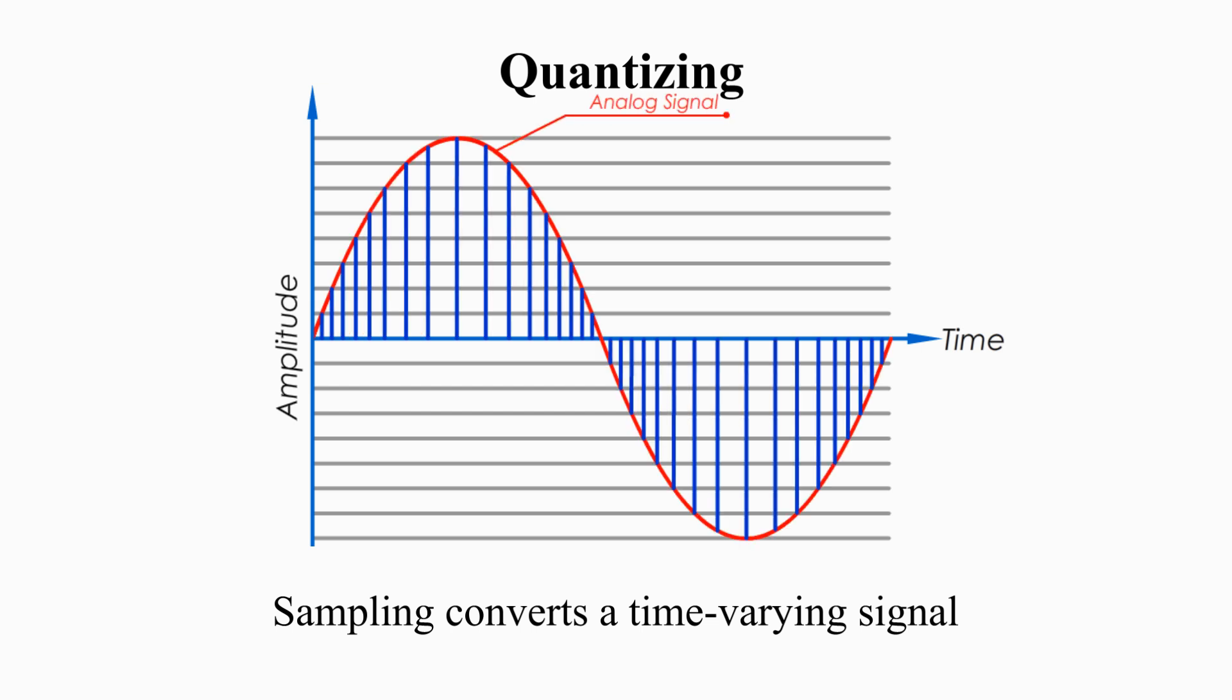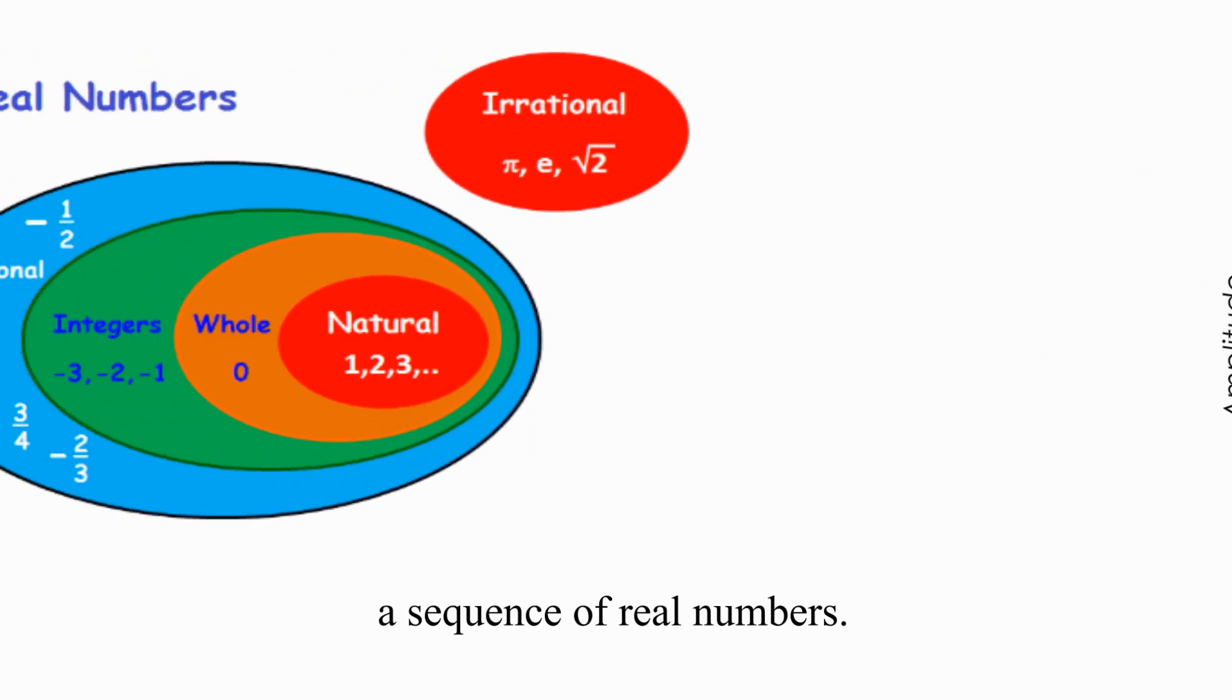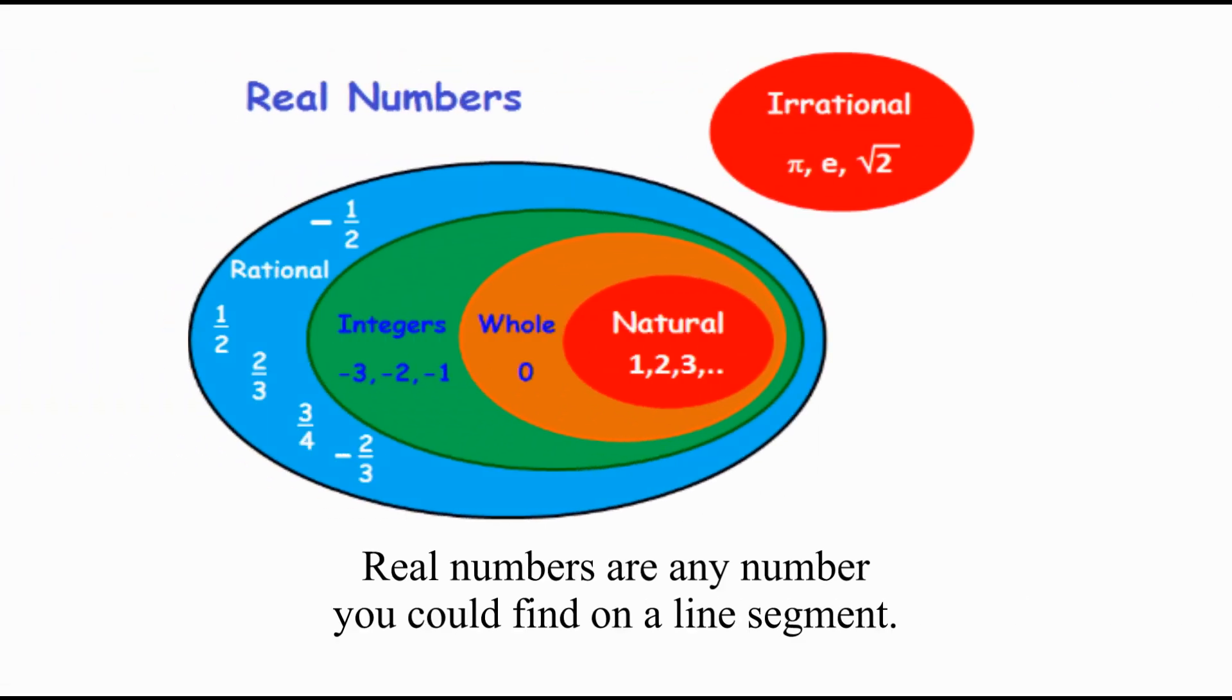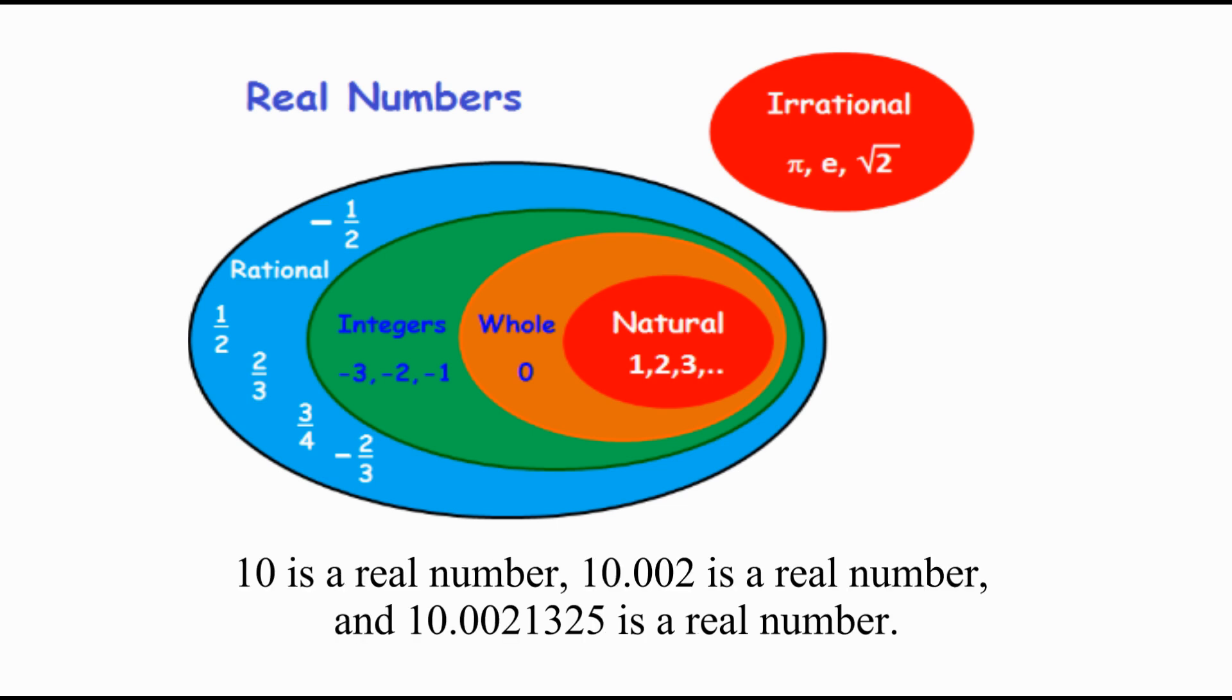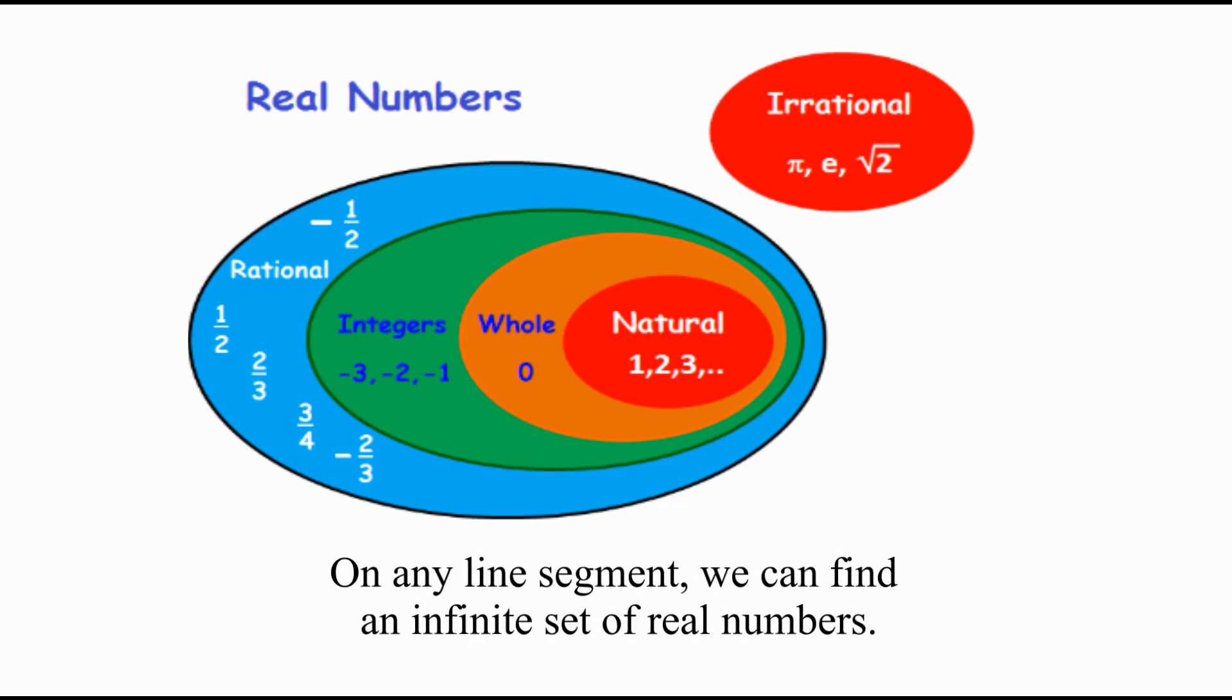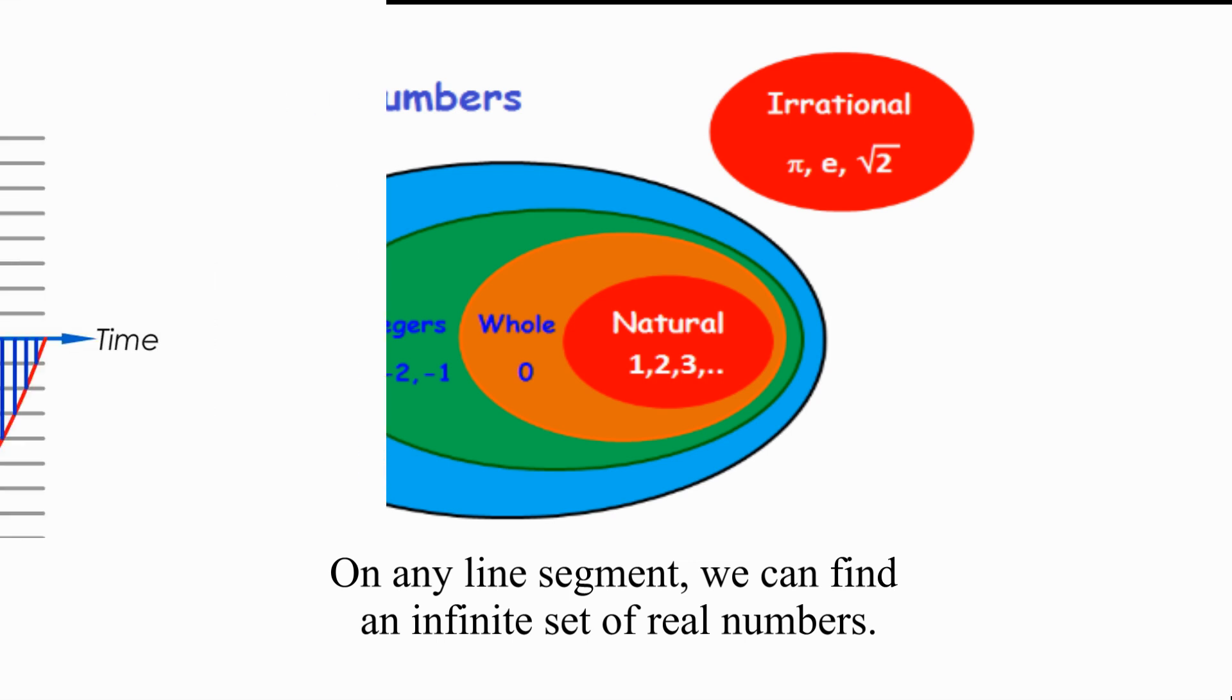Sampling converts a time-varying signal into a discrete time signal, a sequence of real numbers. Real numbers are any number you could find on a line segment. 10 is a real number, 10.002 is a real number, and 10.0021325 is a real number. On any line segment, we can find an infinite set of real numbers.